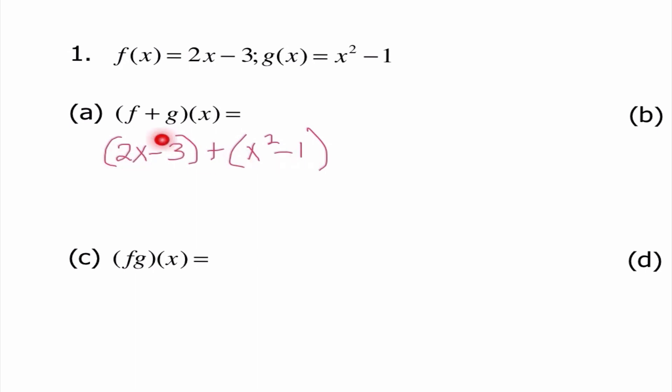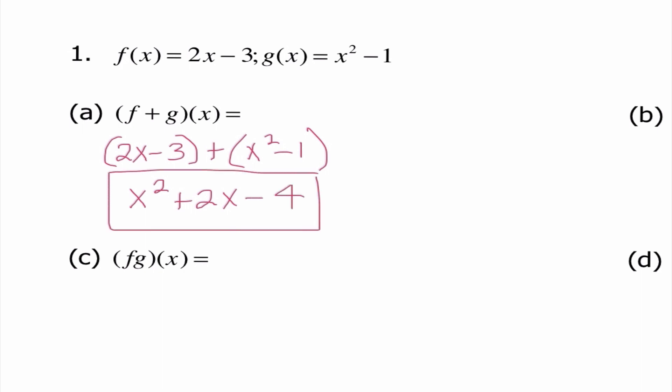There's nothing I can actually do inside these parentheses, so I'm just going to add my like terms together and write my answer in descending order. I only had an x squared and only had 2x, so I combine my constants to get minus 4. So x squared plus 2x minus 4 would be our final answer, since all of my like terms are combined.